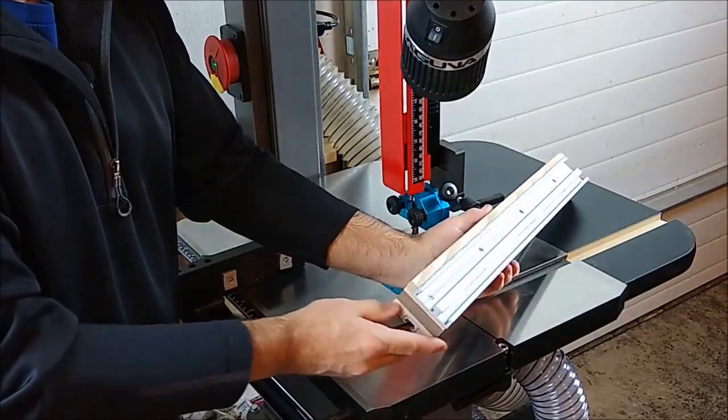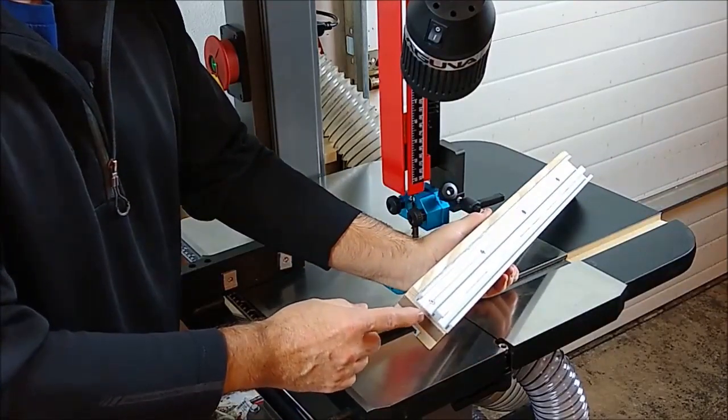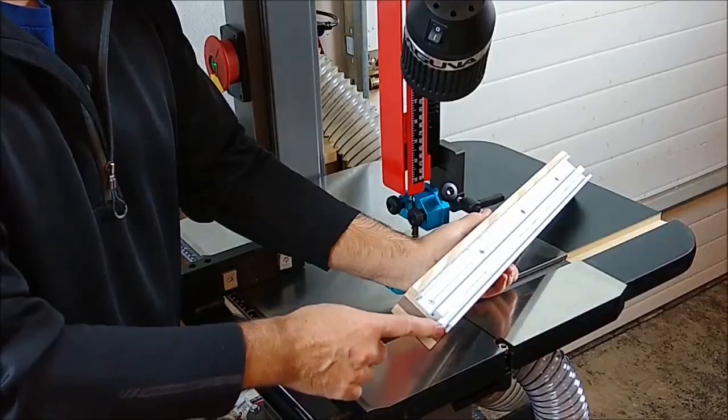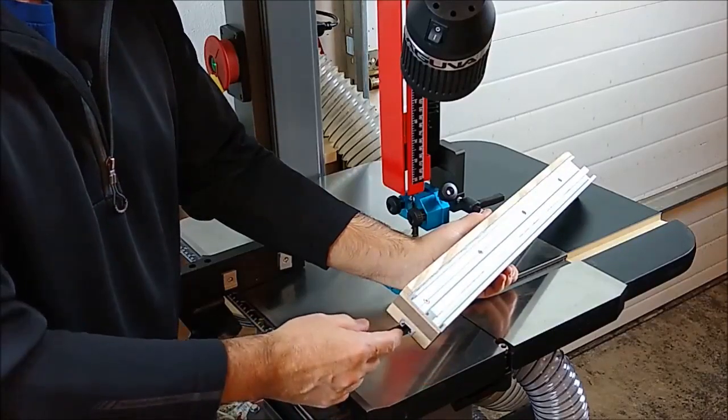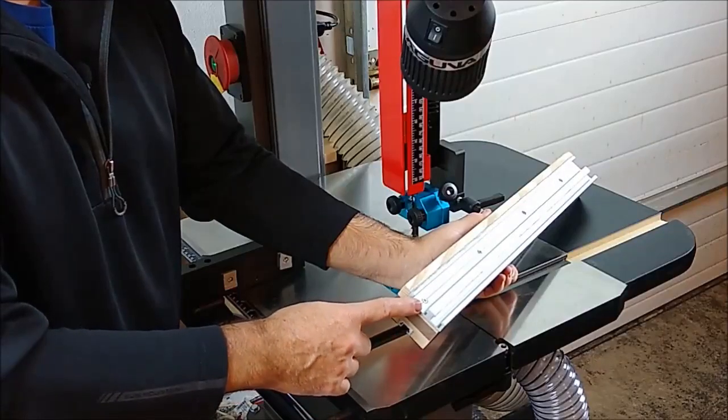On the backside we've got a double track that accepts both miter track hardware and t-track hardware. The t-track on the back is actually not used, it's the miter track that you're after.